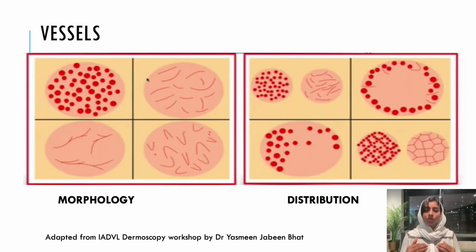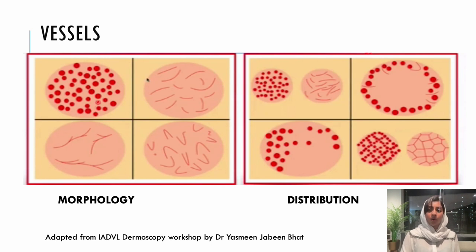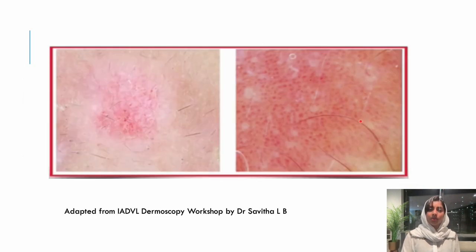Coming to vessels: when visualizing through a dermoscope, you need to check for both morphology and distribution. Morphology can include red dots, linear vessels, branched vessels, or hairpin vessels. Distribution can be uniform, peripheral, irregular, or patterned. Dermoscopic images show dotted vessels as well as linear branches.